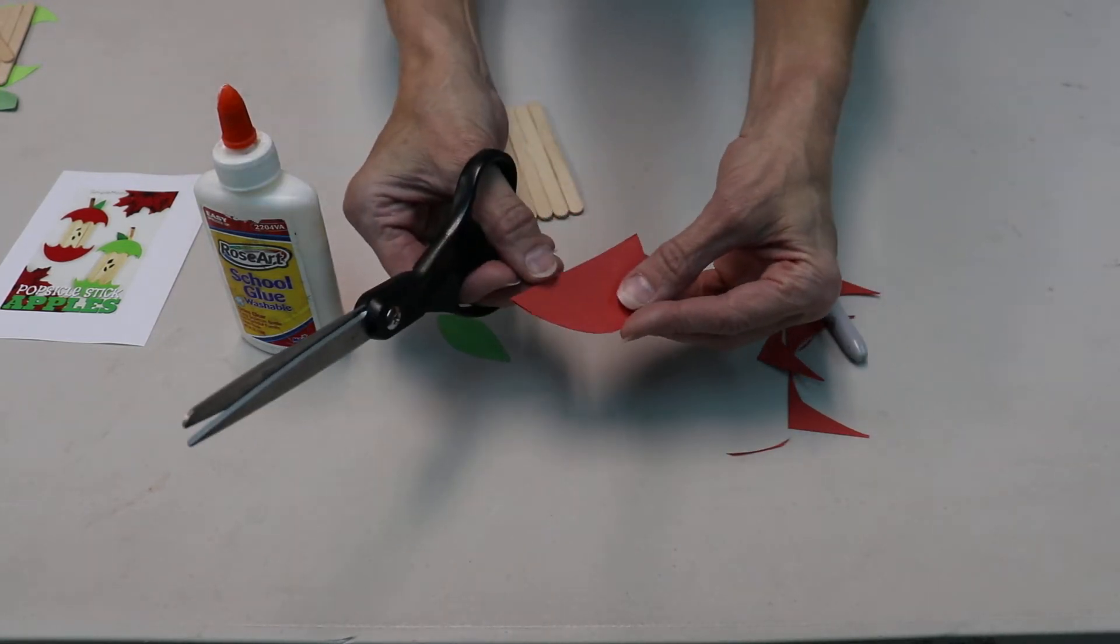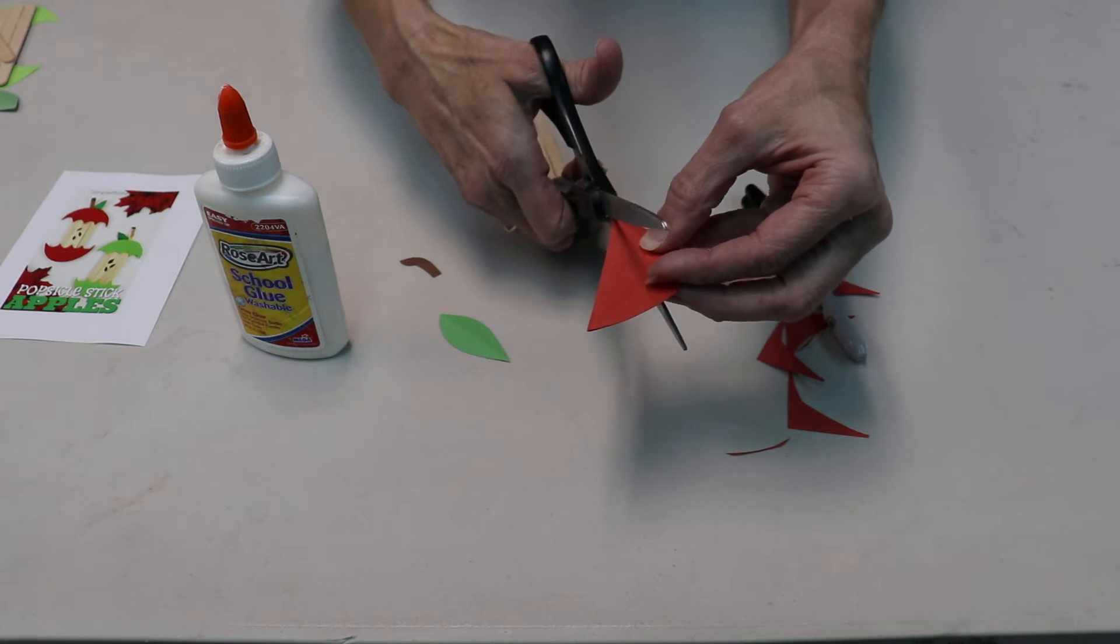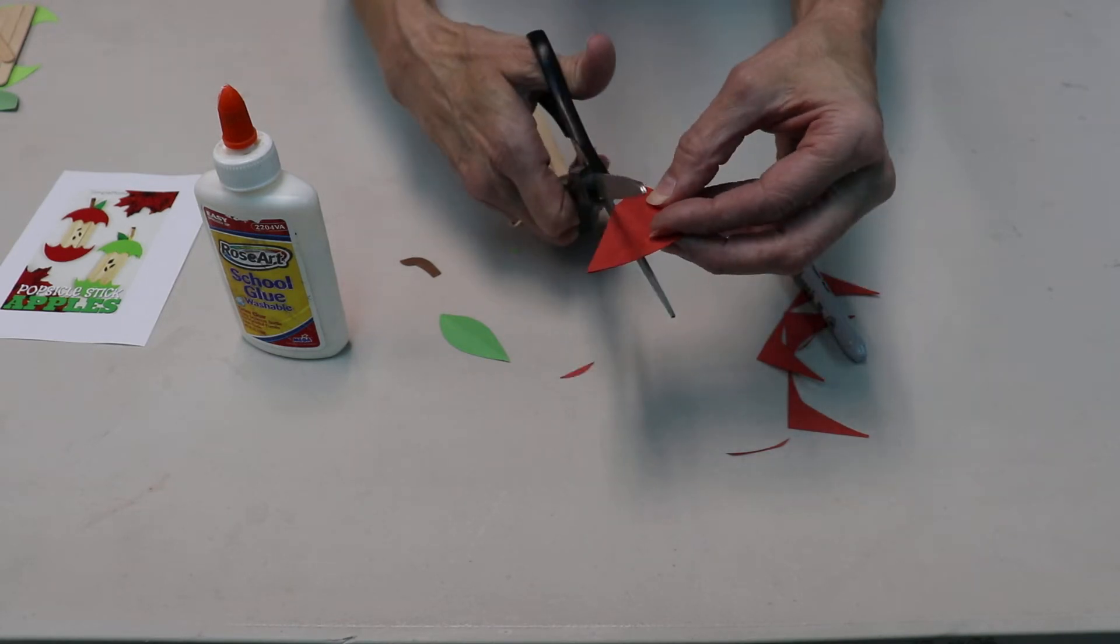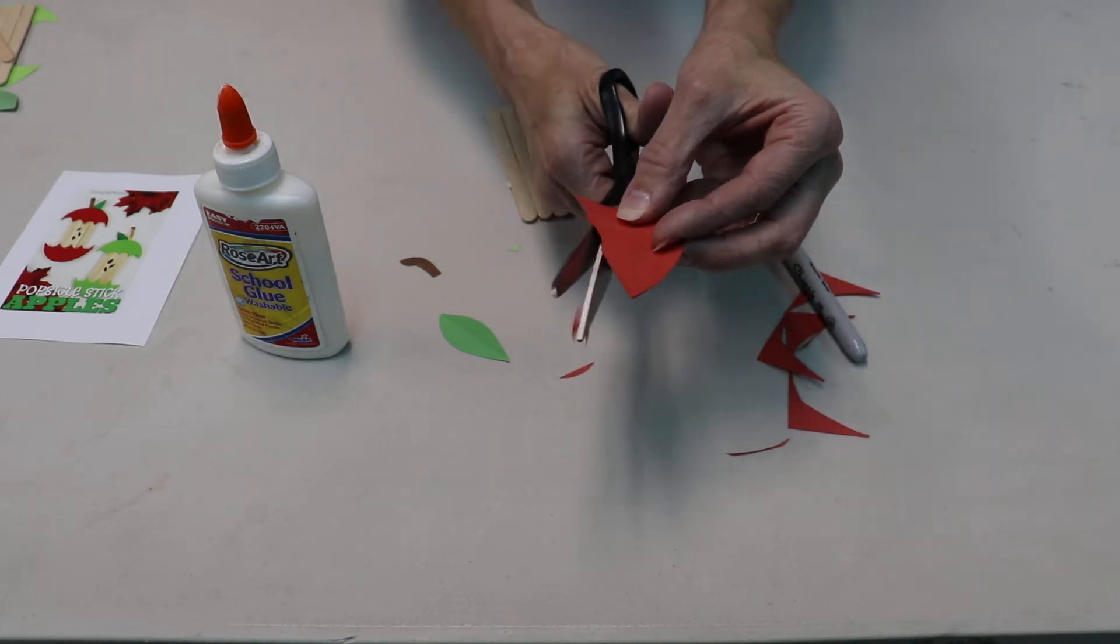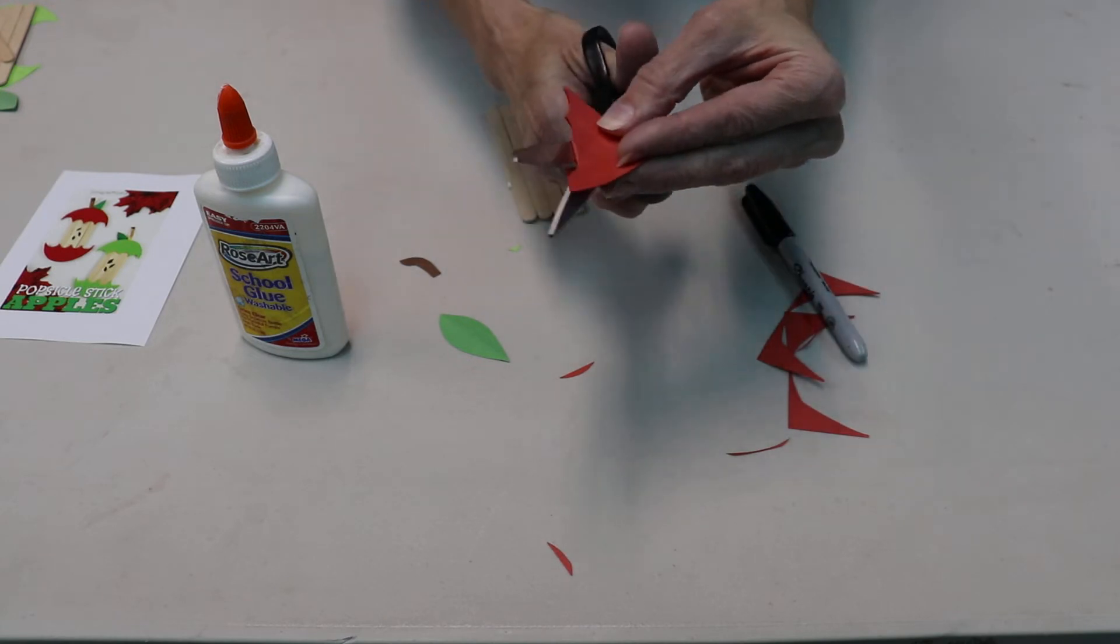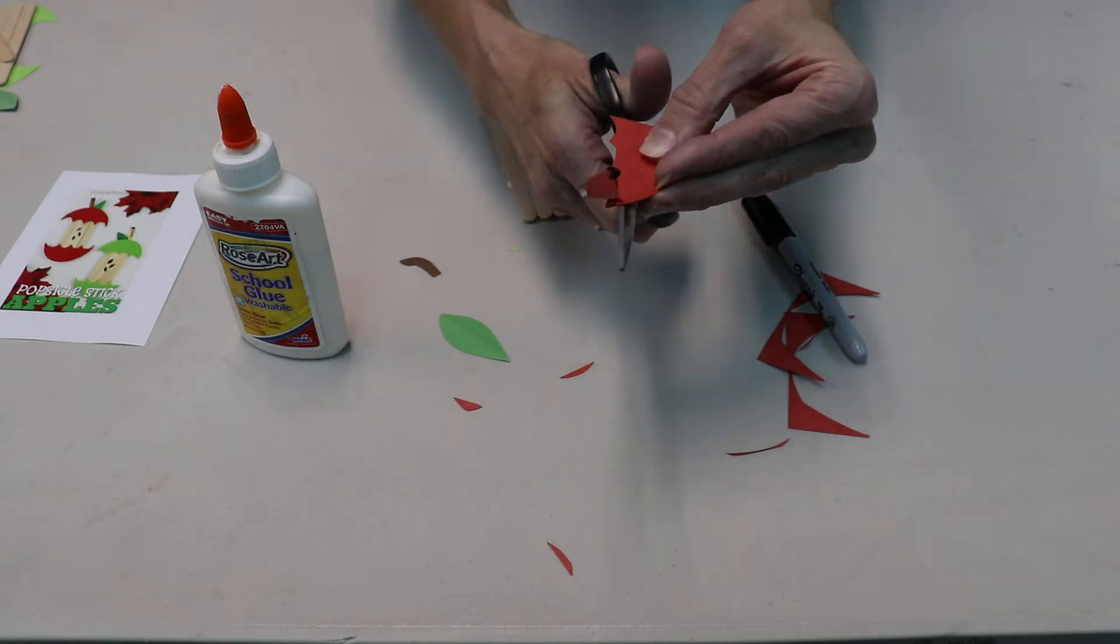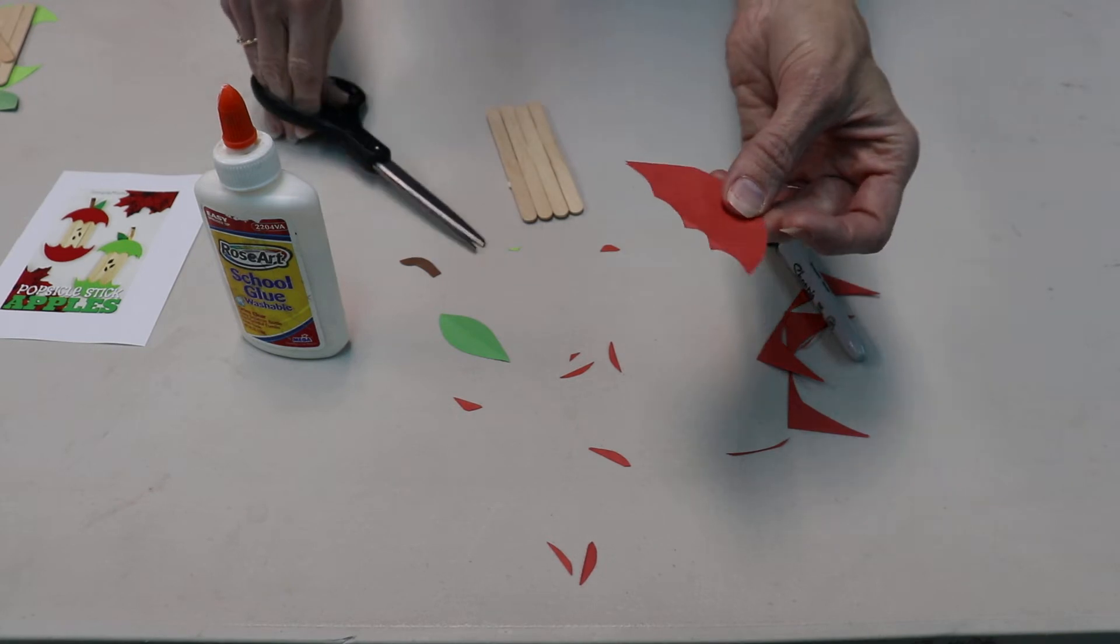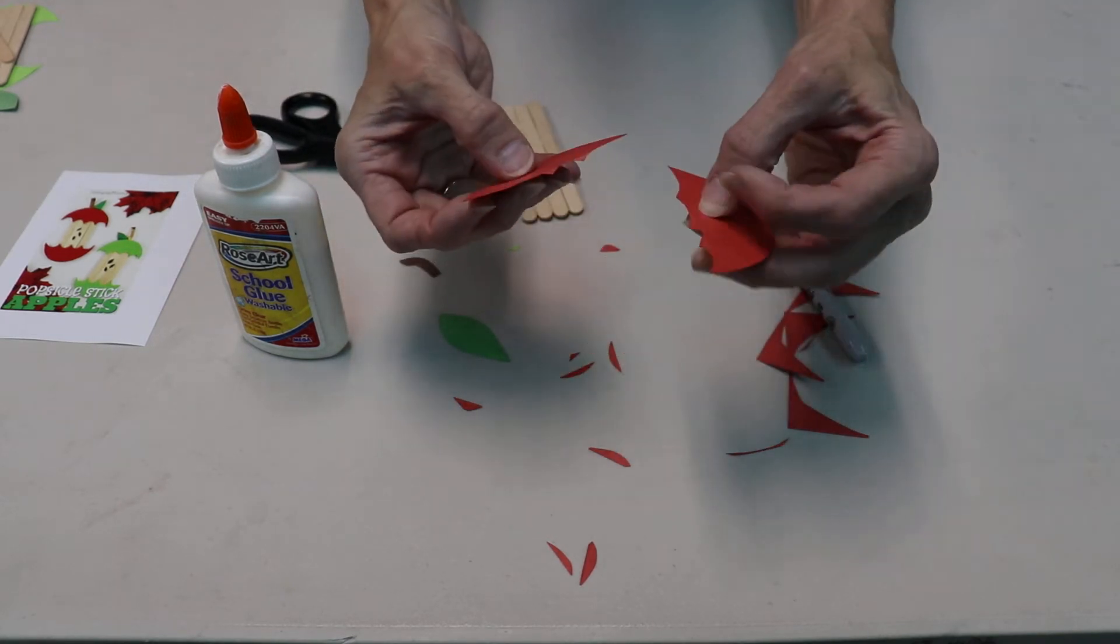Then you'll take it and you'll make little, what looks like bite marks, as if you took a bite out of the apple. Like that, so that it looks all chewed up.